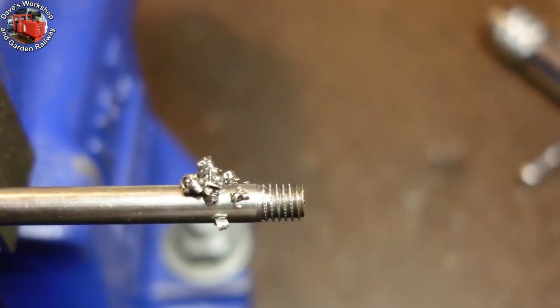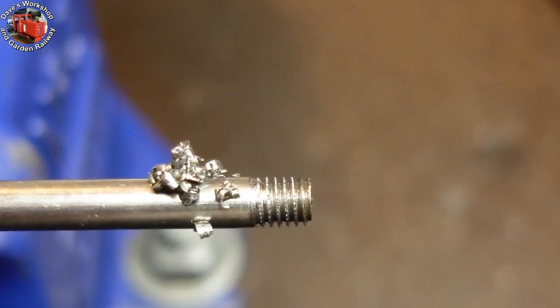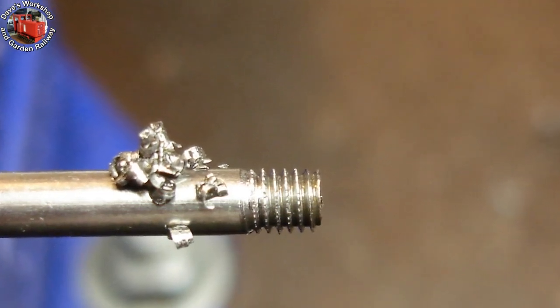Here's a close-up of the piston rod threaded for the piston. It felt like it was cutting nicely with the button die and some cutting oil. However, the crest is torn.